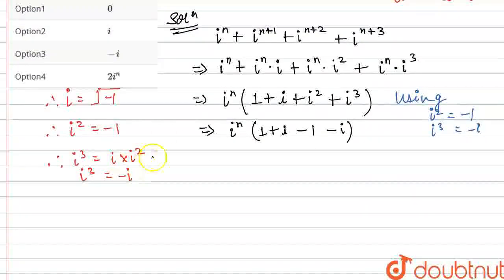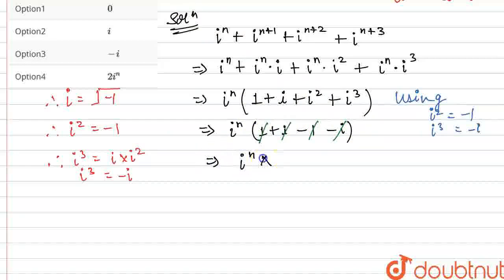As mentioned, you can clearly see that 1 and minus 1 are cancelling each other. Similarly, plus iota and minus iota are cancelling each other. So what we are getting is iota raised to the power n multiplied by 0, which simply equals 0. So we are getting the answer as 0 for this expression.